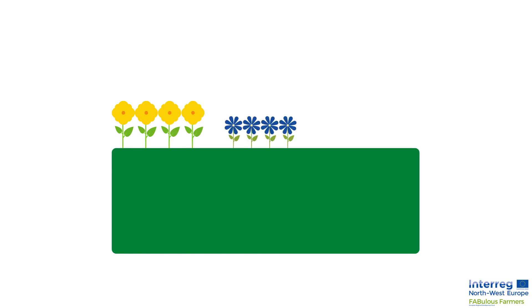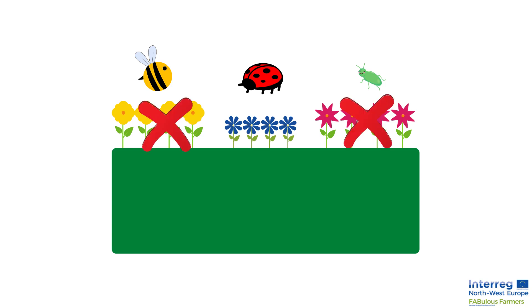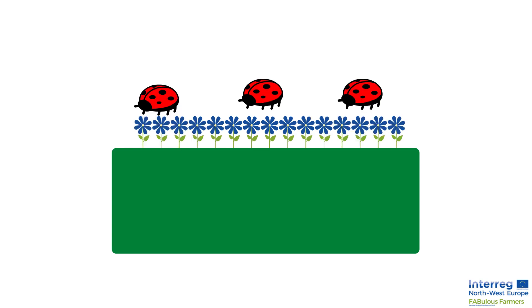A farmer can implement, for example, flower strips next to his field. But depending on the species in the border, this will attract different insects. So by choosing the species, he might attract pollinators or predators — but he might as well choose species that attract pests instead of predators. So a well-made choice is important.